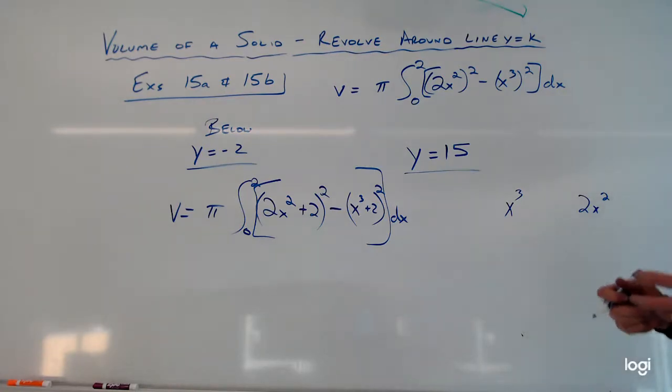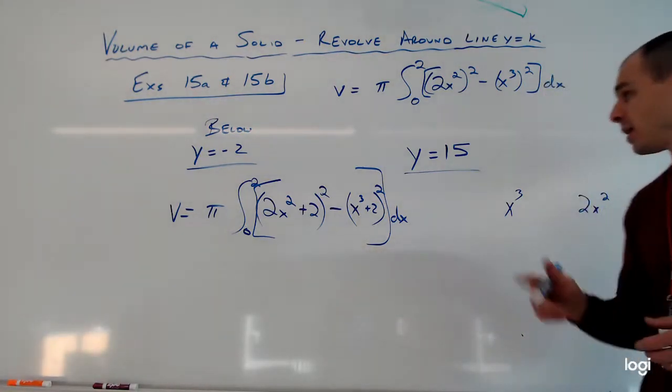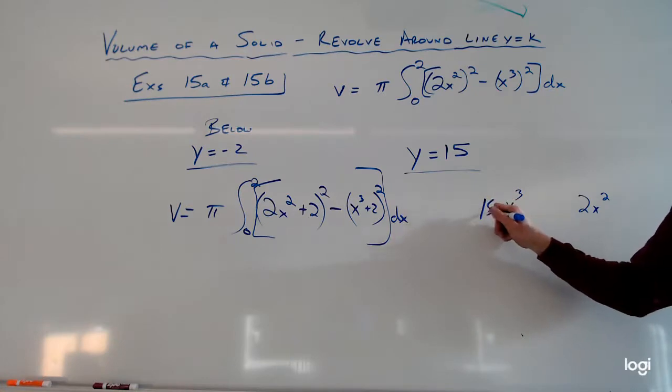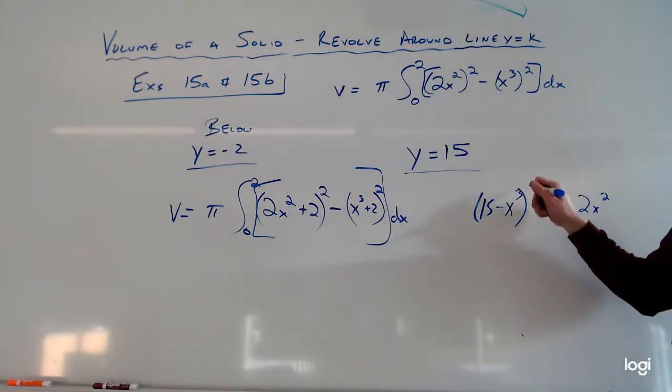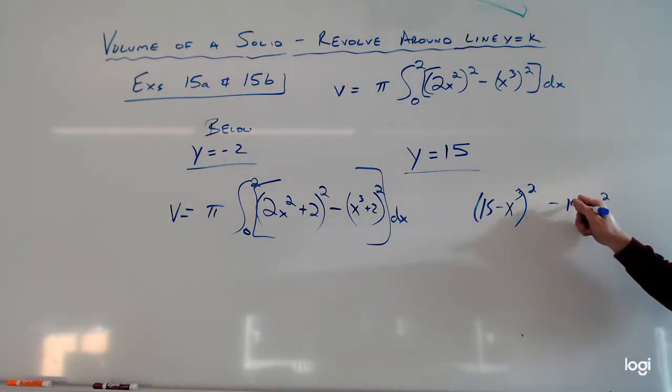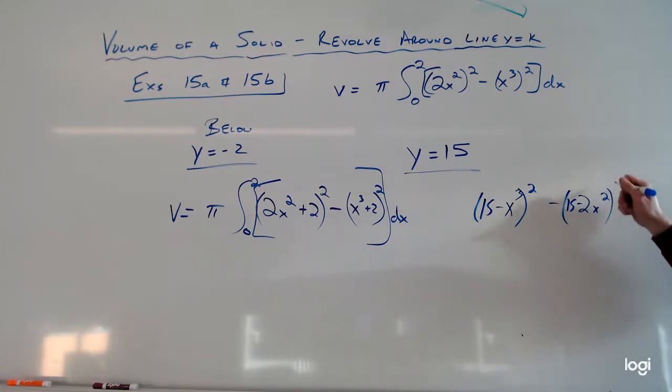And we have to subtract these functions from K. K is 15, so we have 15 minus X cubed wrapped in squared and then 15 minus 2X squared and that's also squared.